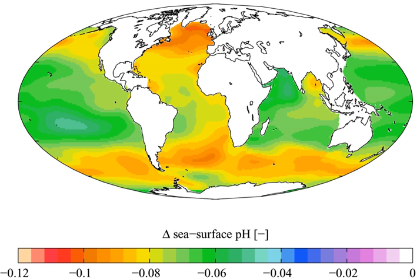Seawater is slightly basic, meaning pH greater than 7, and ocean acidification involves a shift towards pH-neutral conditions rather than a transition to acidic conditions. Ocean acidification has been compared to anthropogenic climate change and called the evil twin of global warming and the other CO2 problem.